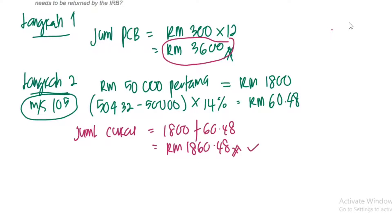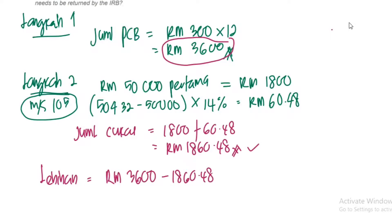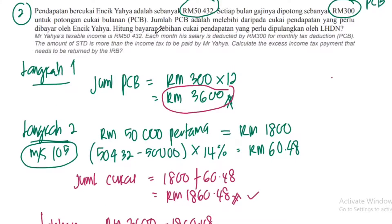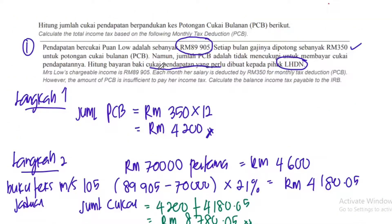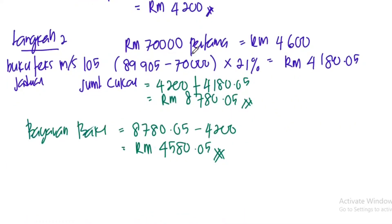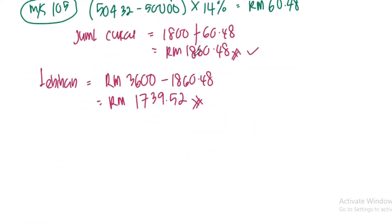Sekarang berlaku lebihan cukai pendapatan. Lebihan ni dia akan dapat balik. RM3,600 tolak dengan RM1,860.48 — dekat sini lebihan dia akan dapat RM1,739.52. Settle. Ini hitung bayaran lebihan cukai pendapatan. Settle untuk PCB — 2 soalan PCB.